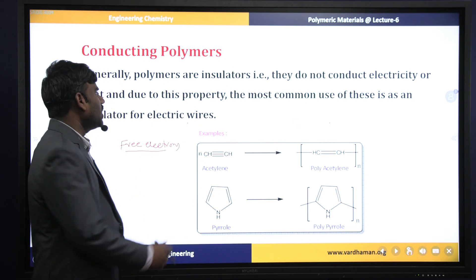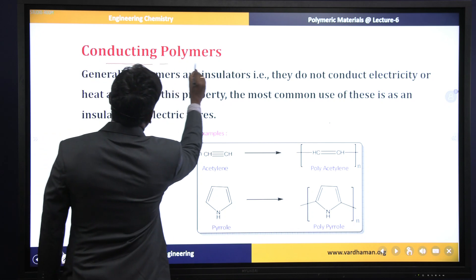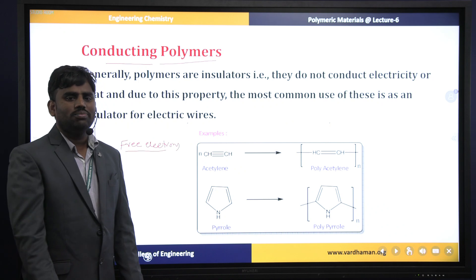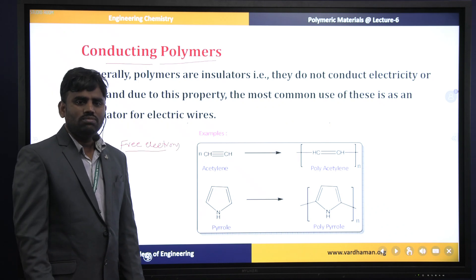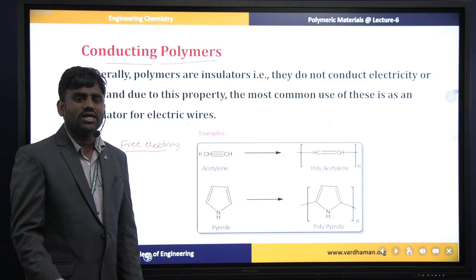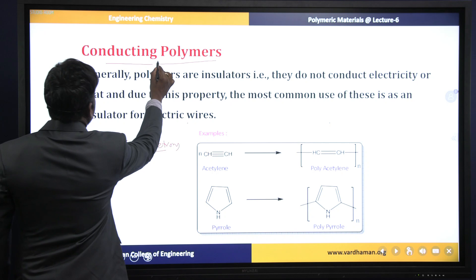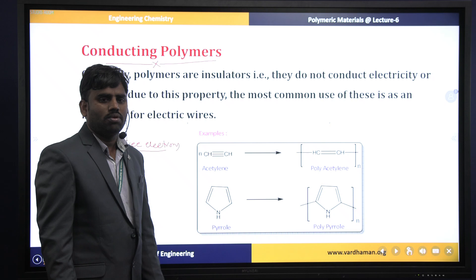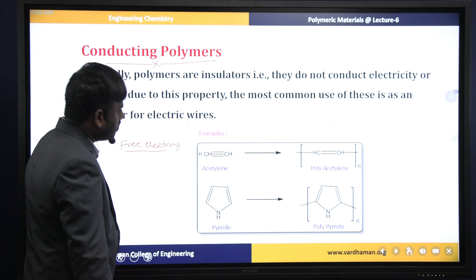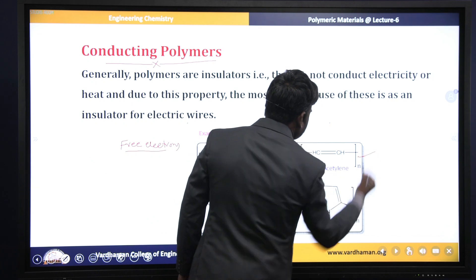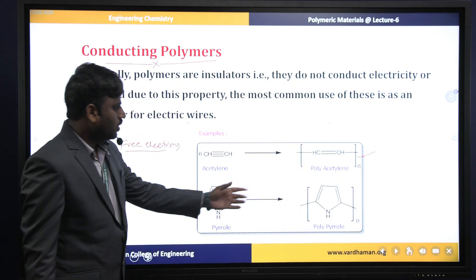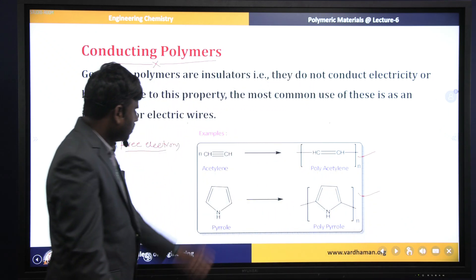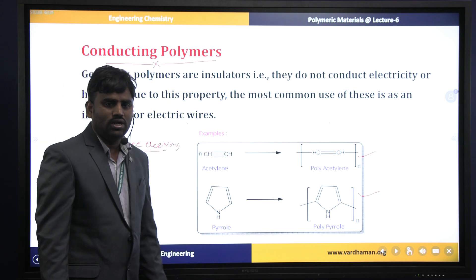But our today's concept is: what are conducting polymers? That means some of the polymer materials also exhibit the conducting nature. Polymers which exhibit conductance are known as conducting polymers. Here I am showing some of the polymers that exhibit conductance. One is the polyacetylene molecule and another one is polypyrrole. These are some examples of conducting polymers.